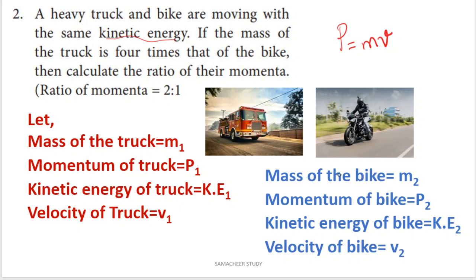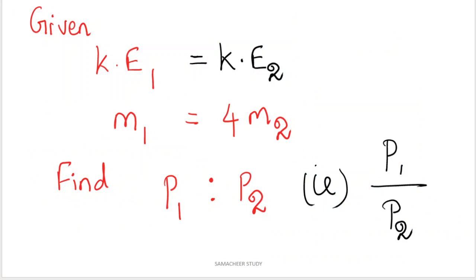So we can calculate the momentum ratio. P1 is to P2 — that is the ratio of momentum. We can calculate P1 by P2.